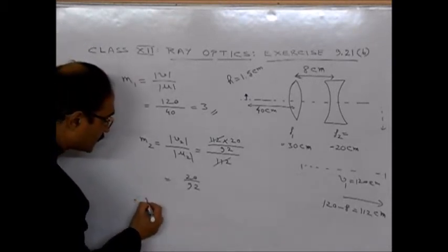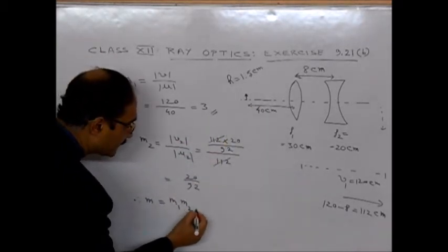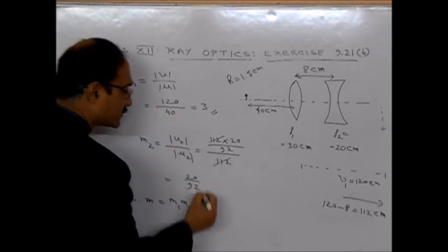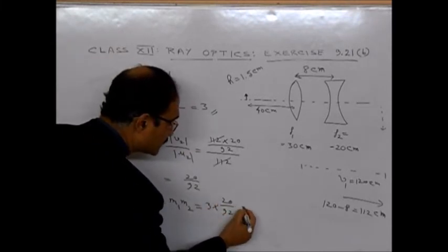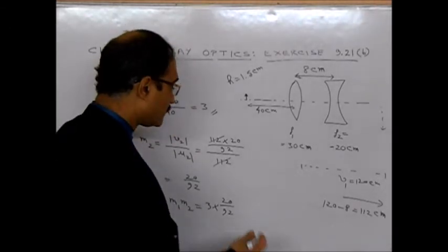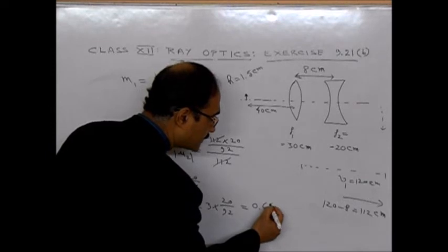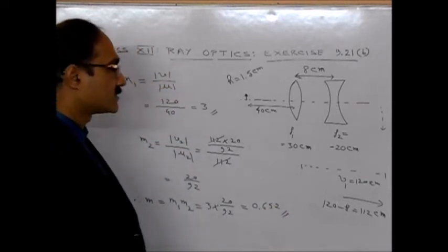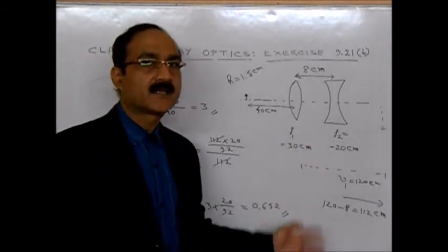Therefore, total magnification of both the lenses is M1 multiplied by M2. M1 is 3. M2 is 20 by 92. So when you do the calculations, this will come to 0.652. This is the answer. This is the total magnification of both the lenses.